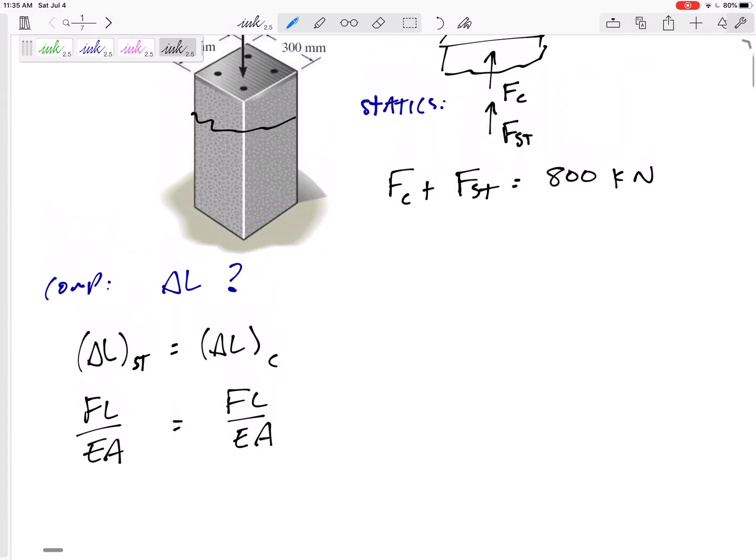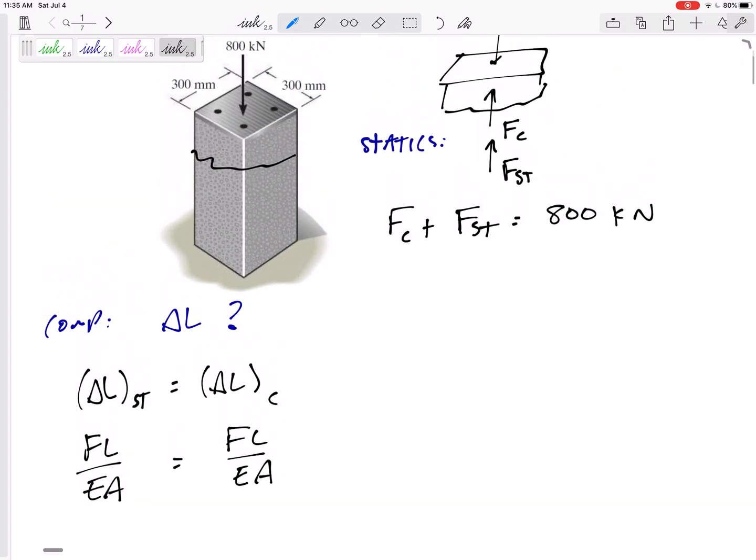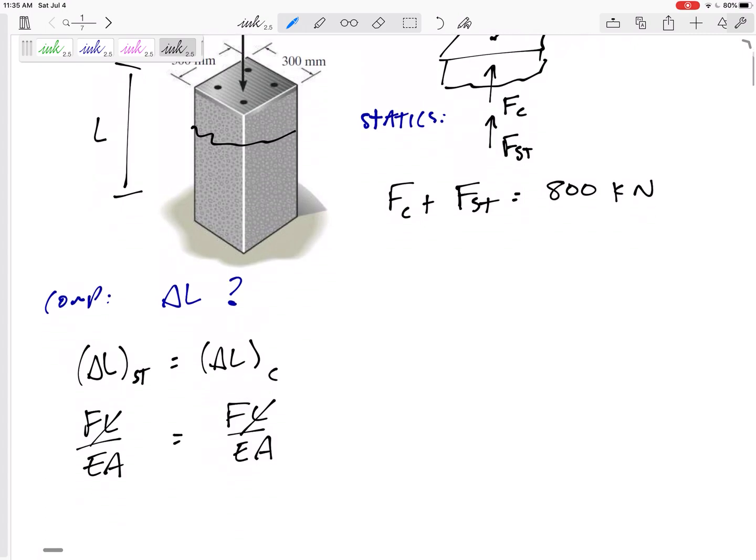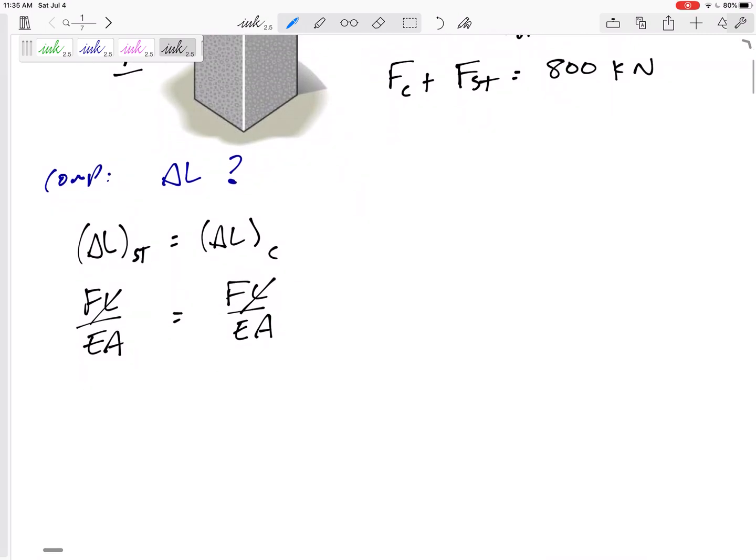So the FL over EA of the steel is going to equal the FL over EA of the concrete. Alright. Okay. So now, sometimes if that's it, if that's our compatibility equation, it actually didn't tell us the L. This L, you could make something up, you could just give it something, or you could see that it divides out from both sides of the equation.